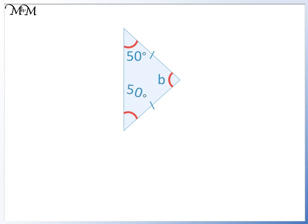50 plus 50 equals 100. To find b we can subtract 100 from 180. 180 take away 100 equals 80, therefore b is 80 degrees.